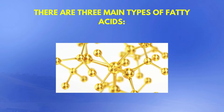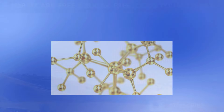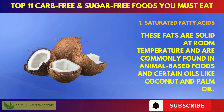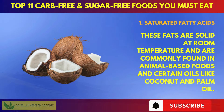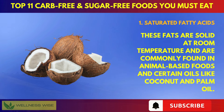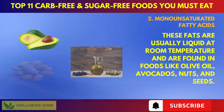There are three main types of fatty acids. First, saturated fatty acids. These fats are solid at room temperature and are commonly found in animal-based foods and certain oils like coconut and palm oil.